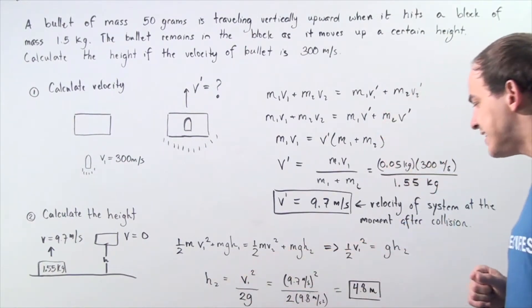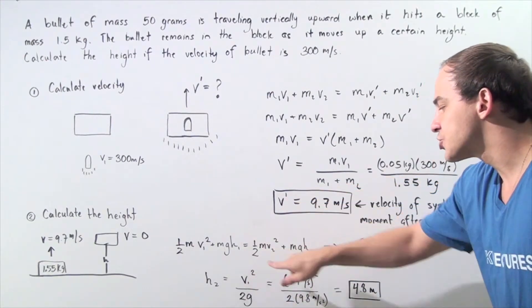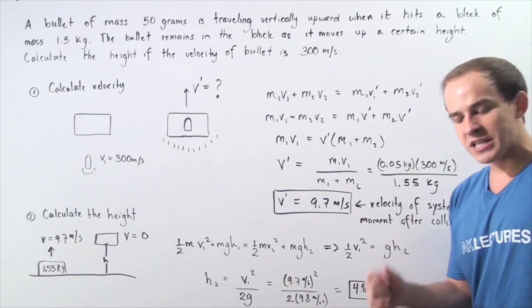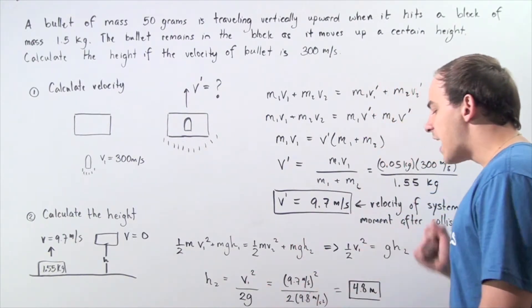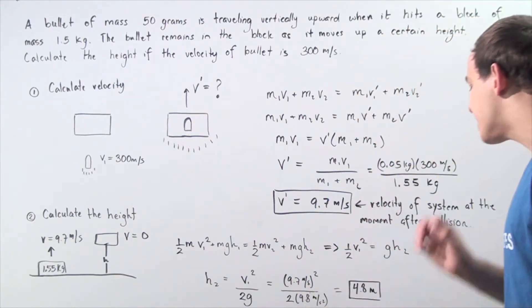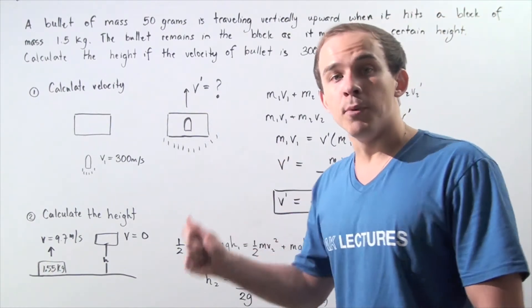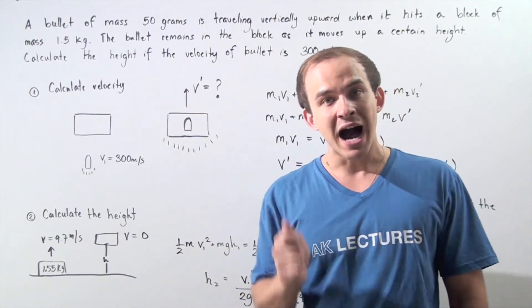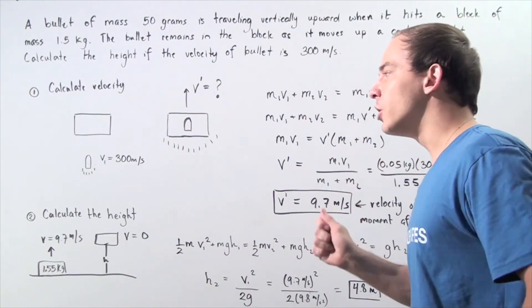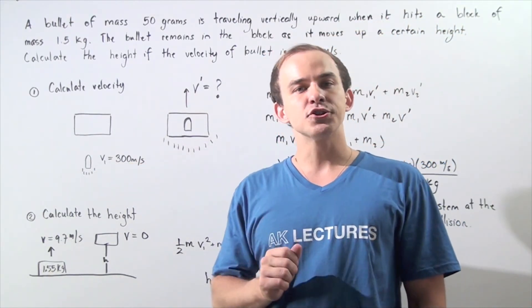Now we solve for h2: h2 equals v1 squared divided by 2g. With v1 equal to 9.7 meters per second, we square that and divide by 2 times 9.8 meters per second squared, and we get approximately 4.8 meters. So our bullet-block system rises to a maximum height of 4.8 meters when the bullet hits the block with a velocity of 300 meters per second.